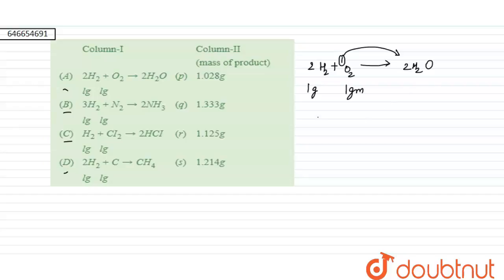Moles of O2 comes out to be given mass is 1 gram and molecular mass is 32. These are the moles for oxygen. If 1 gram of oxygen gives 2 moles of H2O, therefore 1 by 32 moles will give 1 by 32 into 2 moles of H2O.